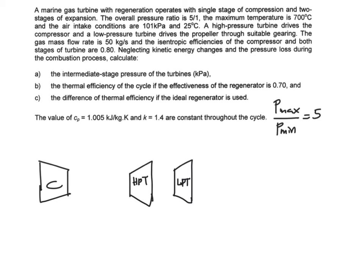And it says that the maximum temperature is 700 degrees C and the air intake conditions are 101 kPa and 25 degrees C. So you have the intake to your compressor given to you if this is your state 1. So P1 is equal to 101 kPa and that temperature at 1 is equal to 25 degrees C. So you need to because you are dealing with ideal gas so you are going to change it into Kelvin. So you will have 298 Kelvin.